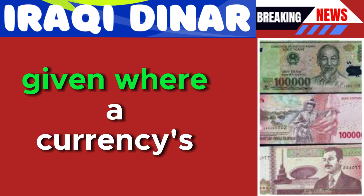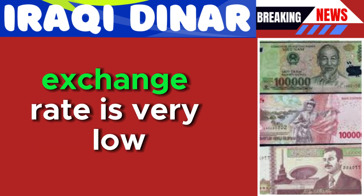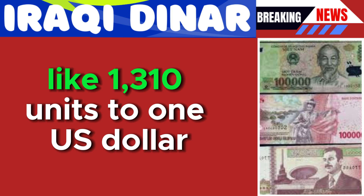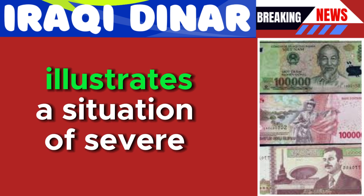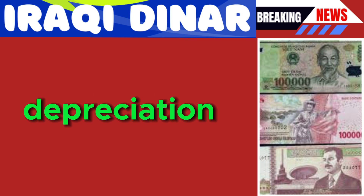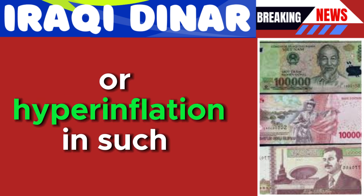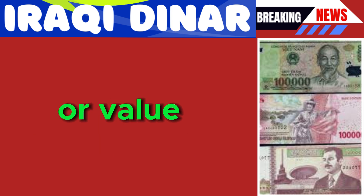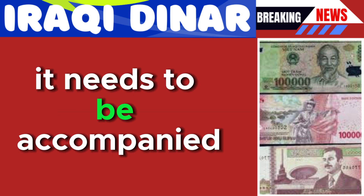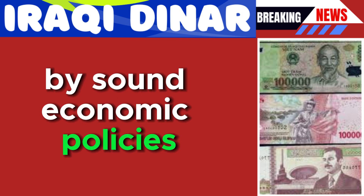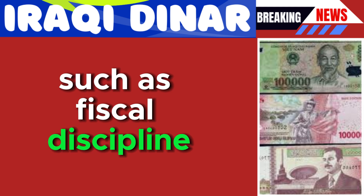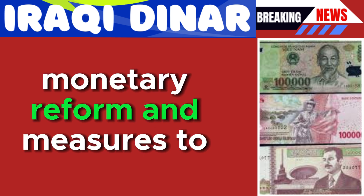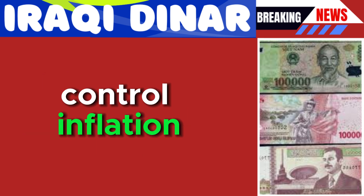The example where a currency's exchange rate is very low — like 1,310 units to 1 US dollar — illustrates a situation of severe depreciation or hyperinflation. In such cases, redenomination alone cannot restore confidence or value. It needs to be accompanied by sound economic policies, such as fiscal discipline, monetary reform, and measures to control inflation.